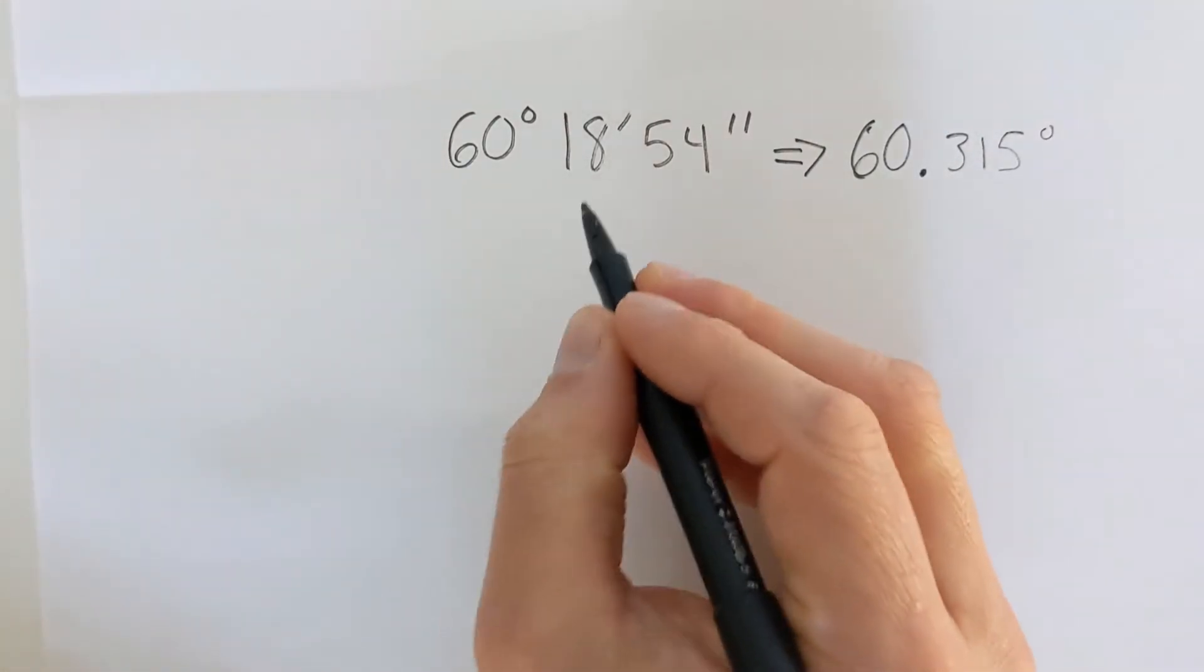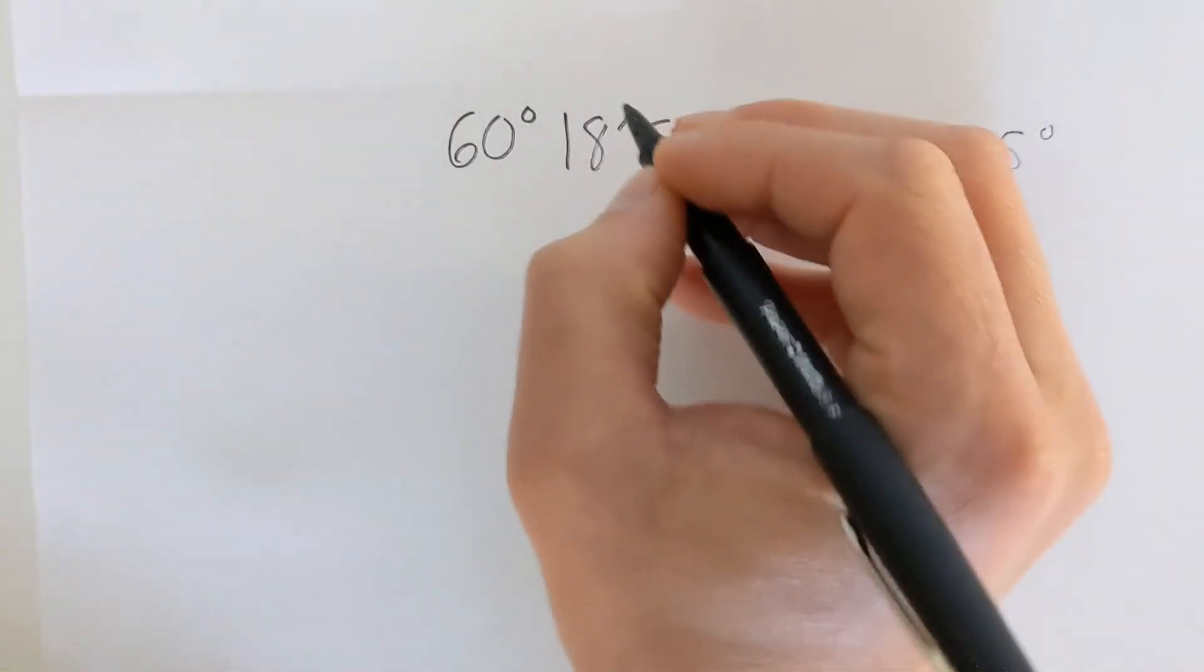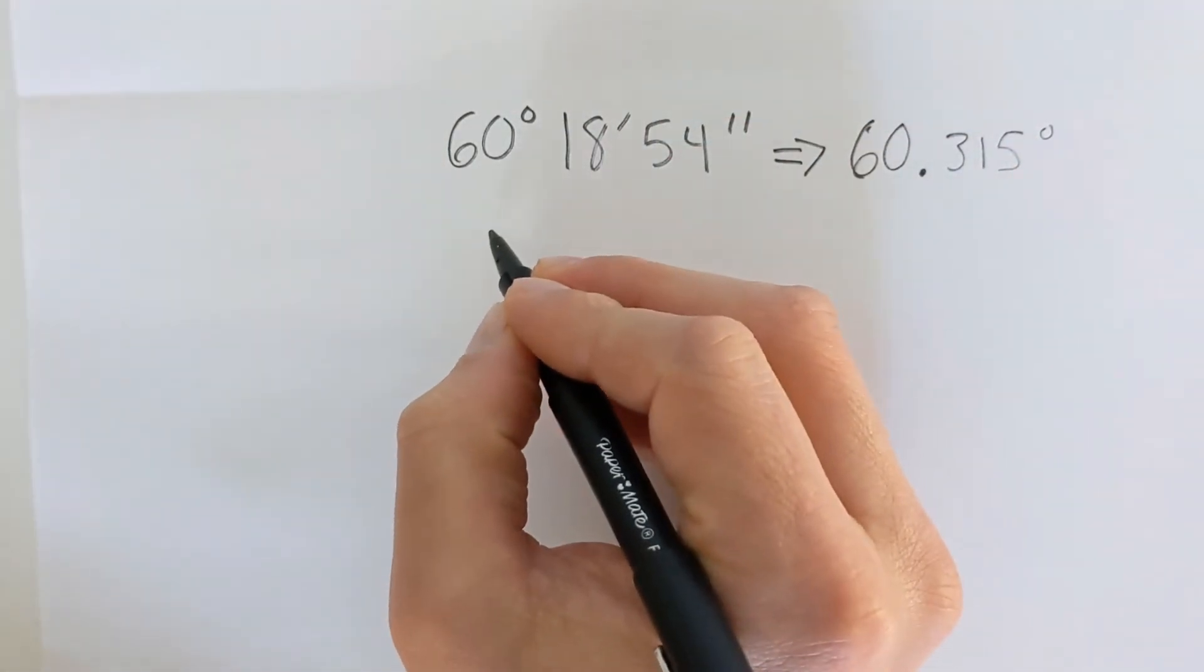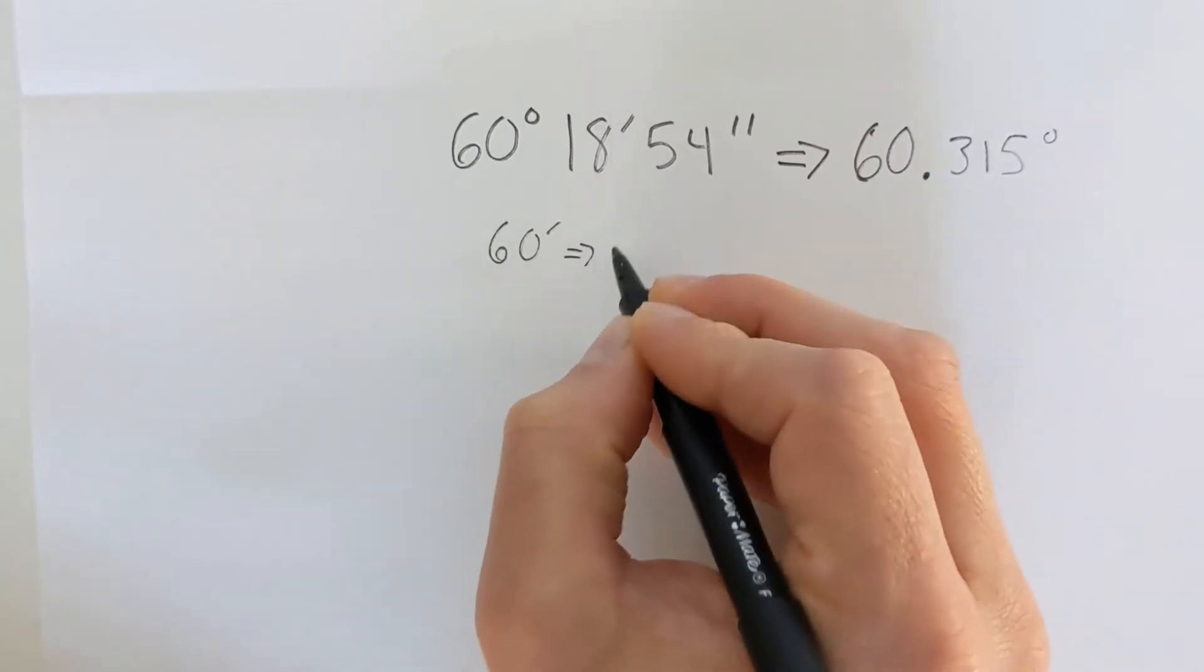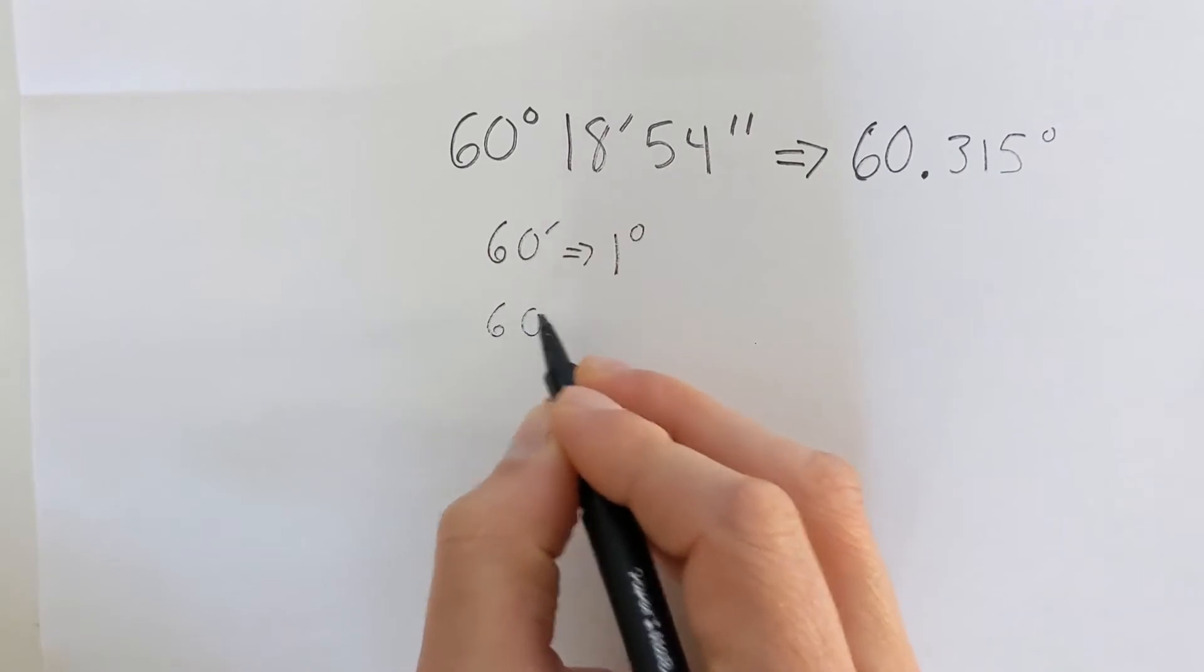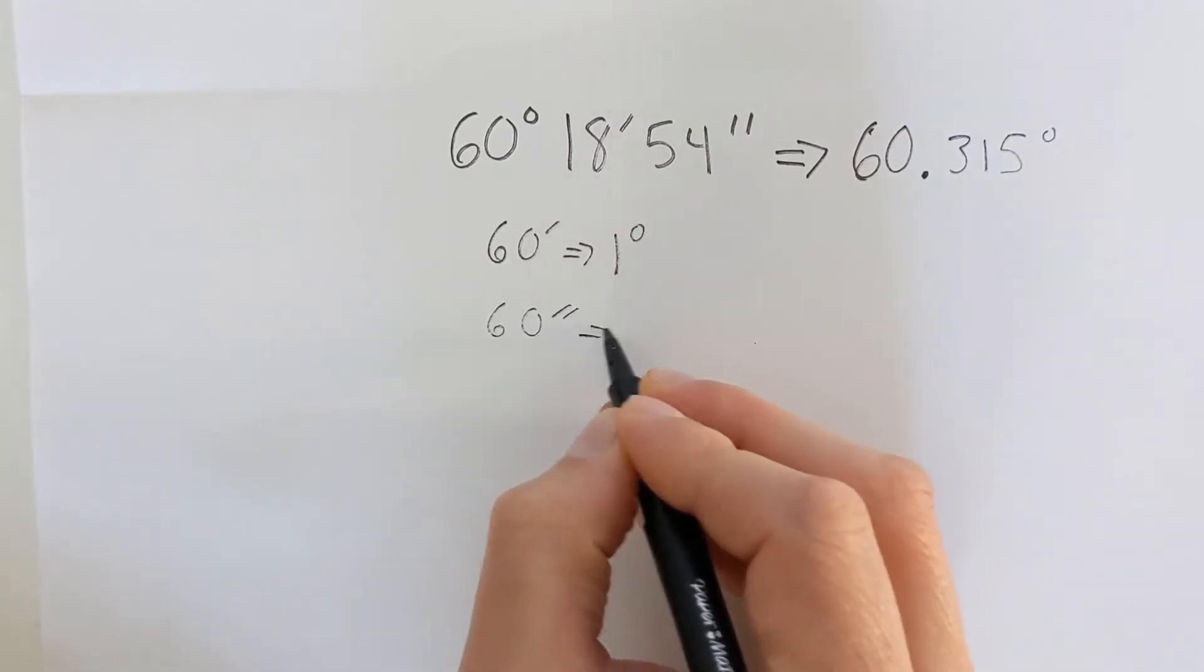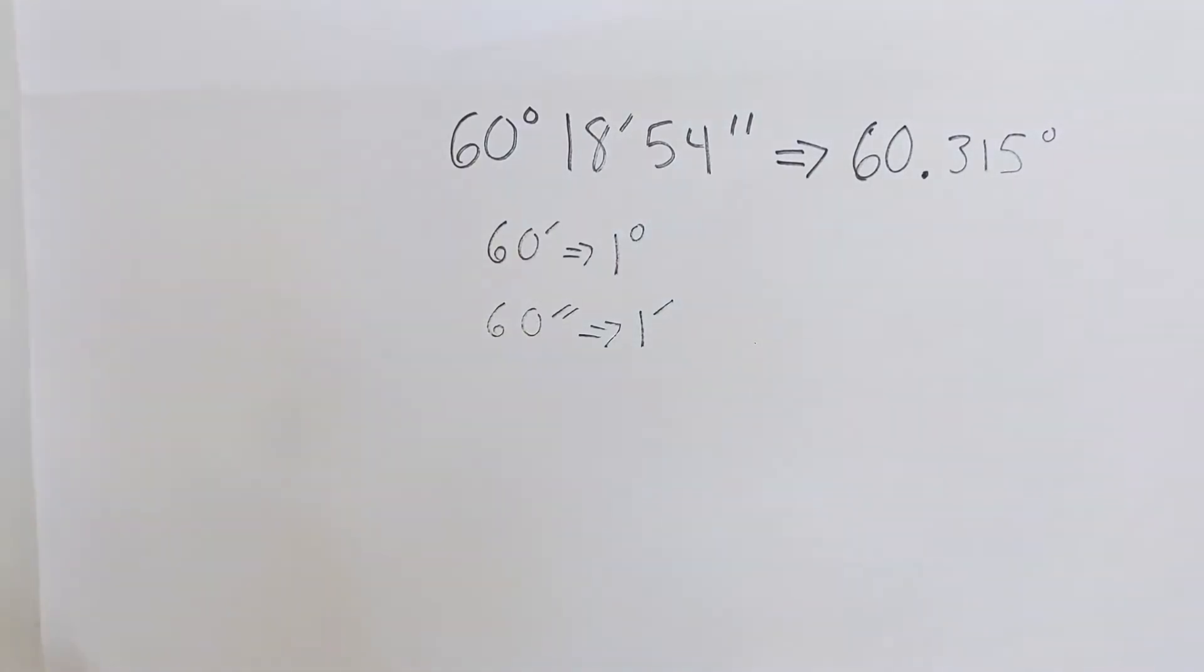So when we have minutes and seconds, just like with time, we have 60 minutes in one degree. We also have 60 seconds in one minute. So just like time, we have a similar conversion there.